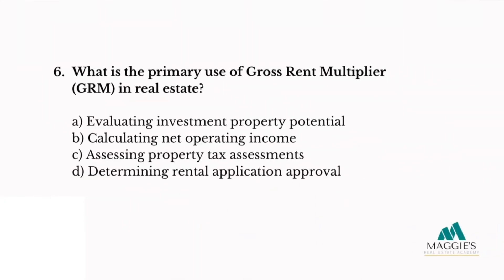Question six: What is the primary use of gross rent multiplier, GRM, in real estate? A. Evaluating investment property potential. B. Calculating net operating income. C. Assessing property tax assessments. Or D. Determining rental application approval. The answer is A — evaluating investment property potential.